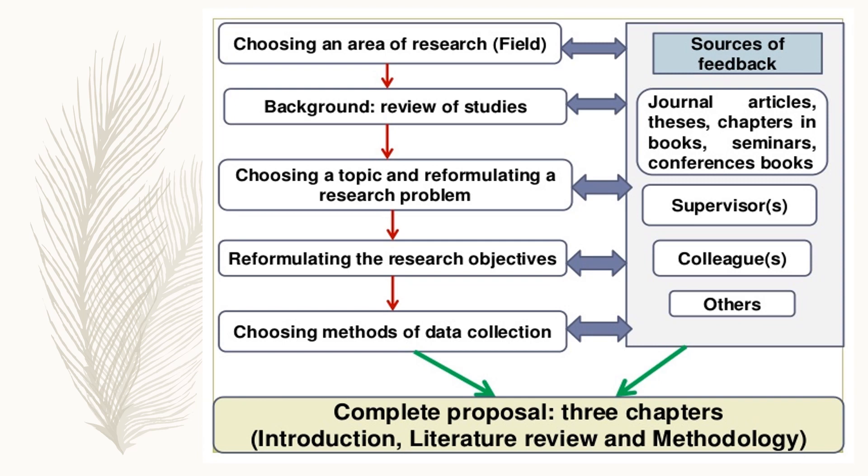You start your research by choosing an area of research or field, which you can find from sources of feedback. The next step is you have to review studies and do the literature review to find the problem background. This can be done by reading journal articles, theses, chapters in books, seminars, and conference books. After that, you can choose a topic and start reformulating a research problem. This can be done by discussing with your supervisor, colleagues, or others.